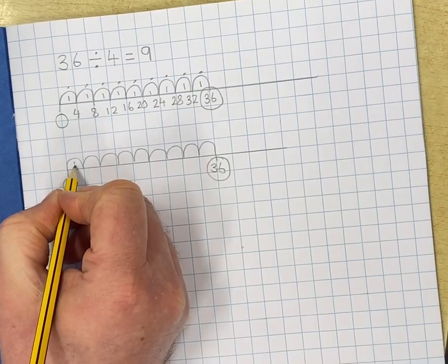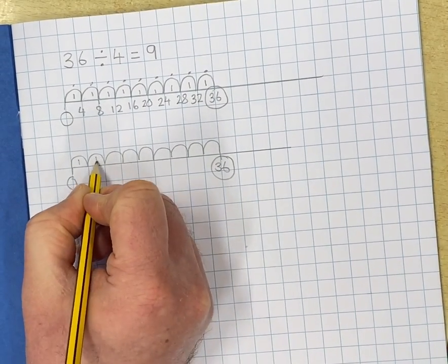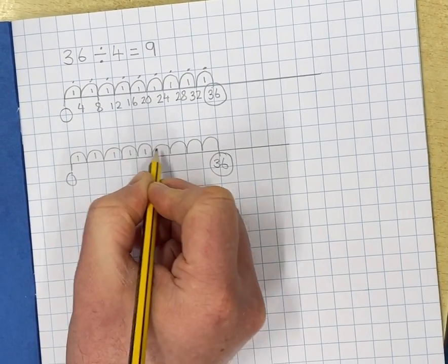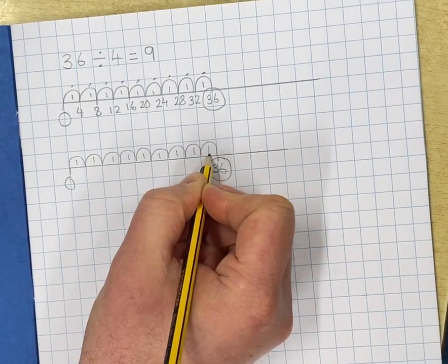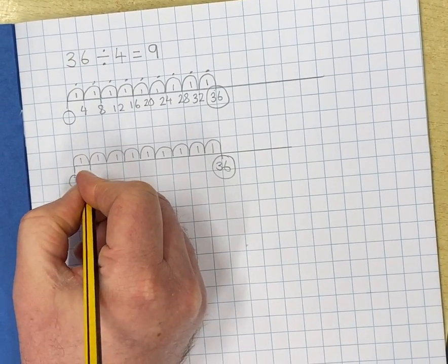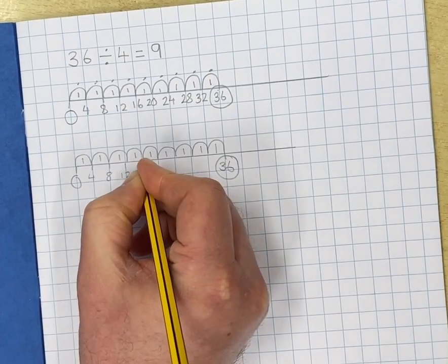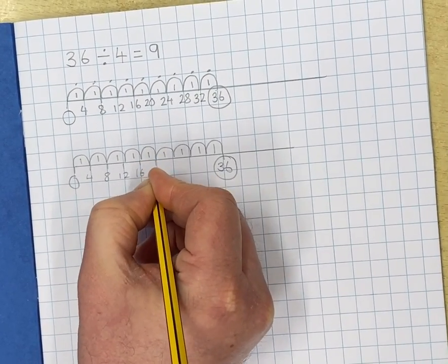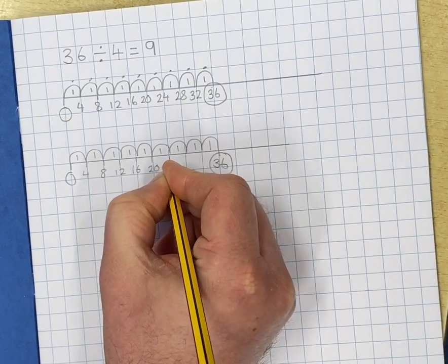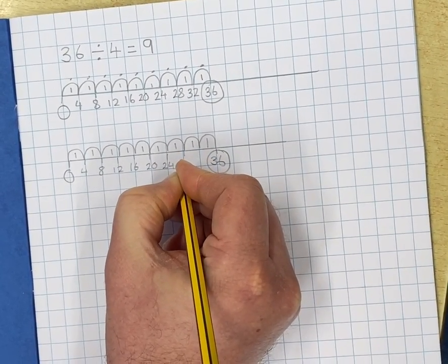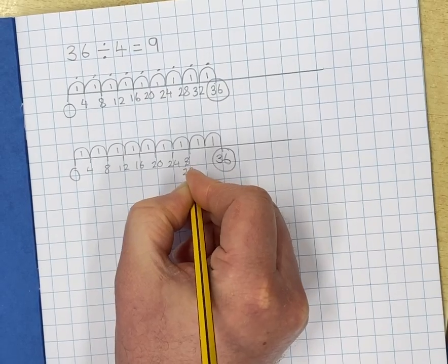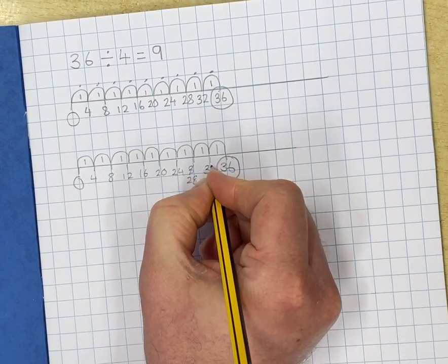Each of these jumps is one chunk of 4. So I can put 1 in all of those. And then I can fill in the numbers. 4, 28 and 32.